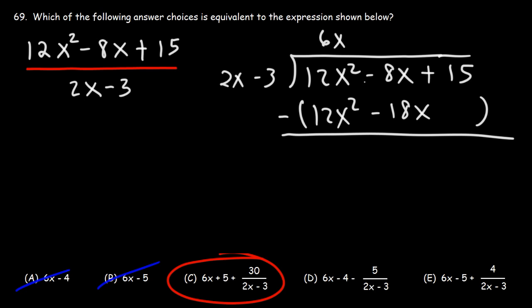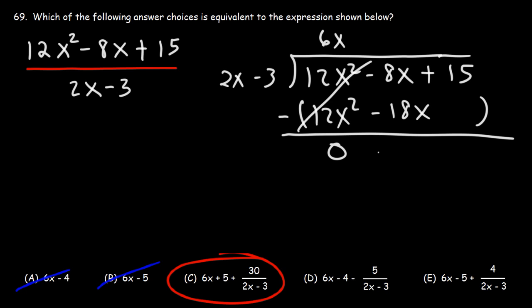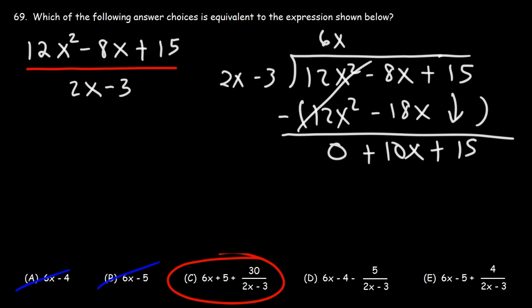Now we'll subtract. 12x squared minus 12x squared is 0 — they cancel. Negative 8 minus negative 18 is negative 8 plus 18, so that's positive 10. We bring down the 15. Now let's repeat the process and divide 10x by 2x. 10x divided by 2x is 5.